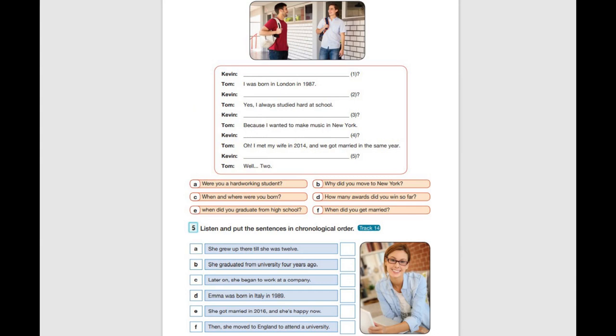Page 53, exercise 5: Listen and put the sentences in chronological order. 1. Emma was born in Italy in 1989. 2. She grew up there till she was 12.